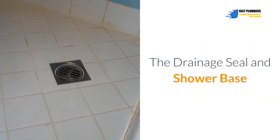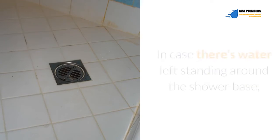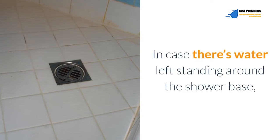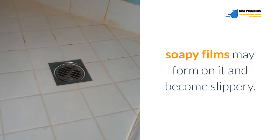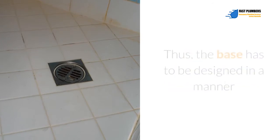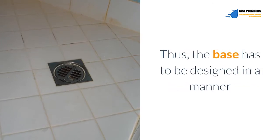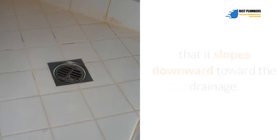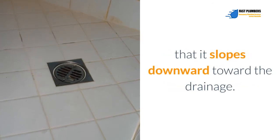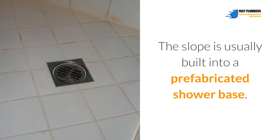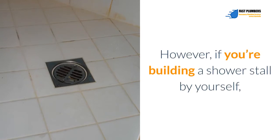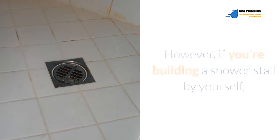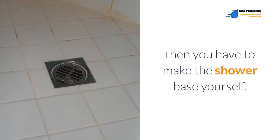The Drainage Seal and Shower Base. In case there's water left standing around the shower base, soapy films may form on it and become slippery. Thus, the base has to be designed in a manner that it slopes downward toward the drainage. The slope is usually built into a prefabricated shower base. However, if you're building a shower stall by yourself, then you have to make the shower base yourself.